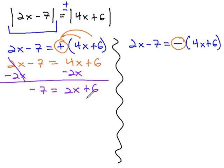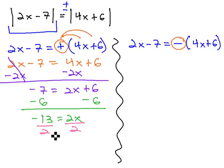Now, it's a two-step equation. We'll subtract 6 from both sides to get negative 13 equals 2x, and finally, divide both sides by 2 to get our first solution for x: negative 13 halves.